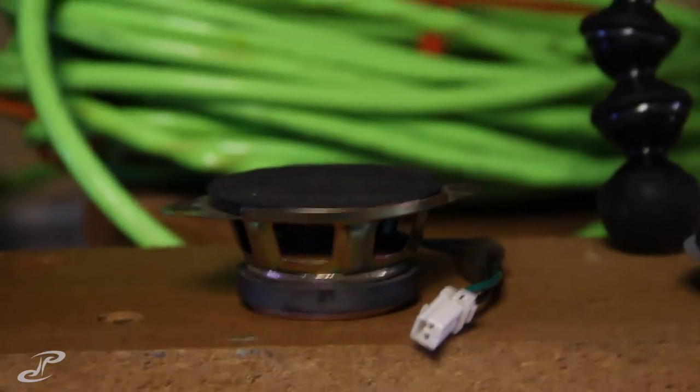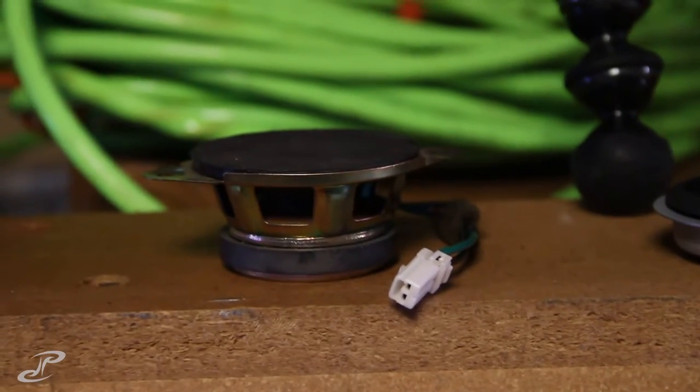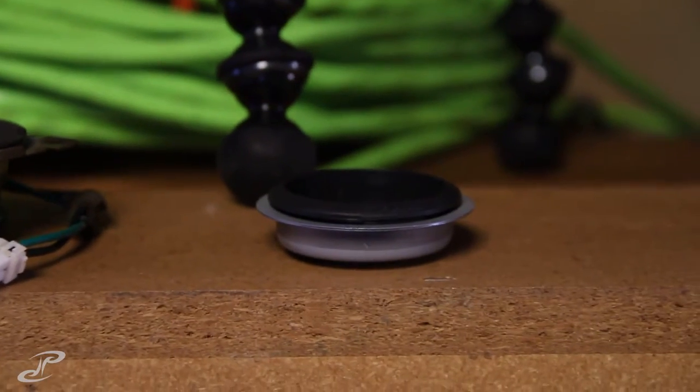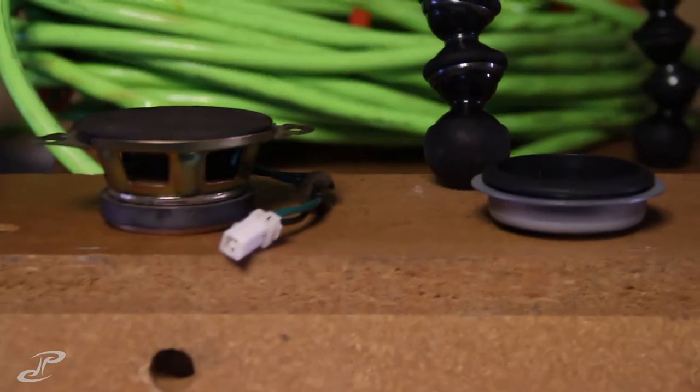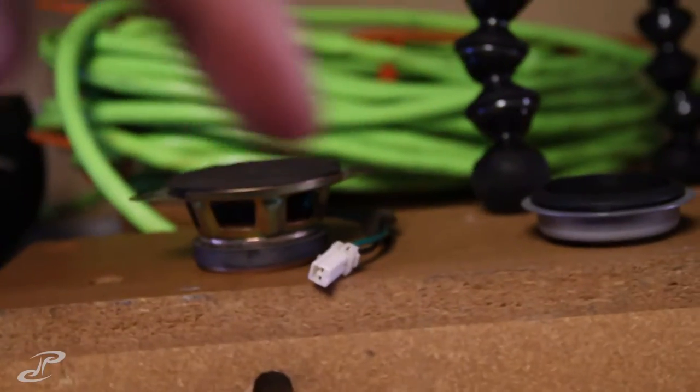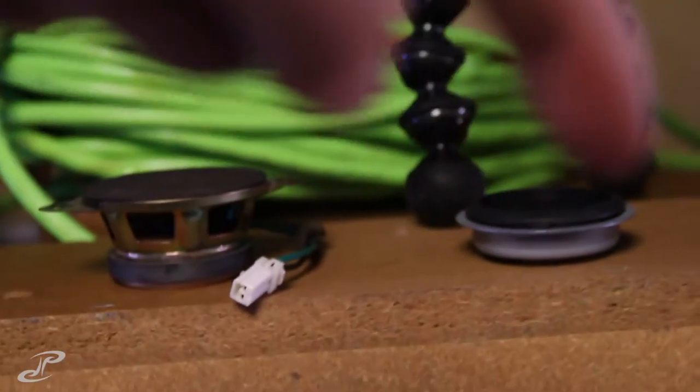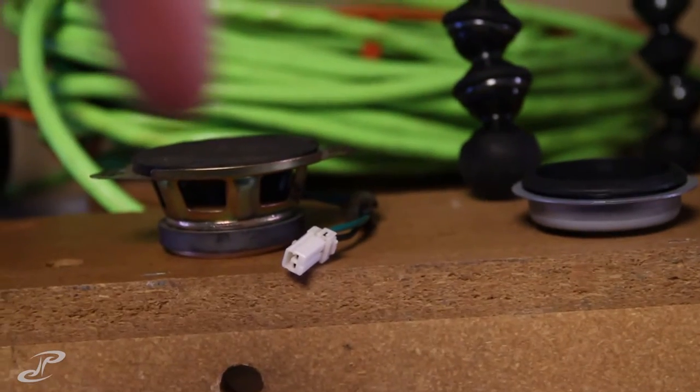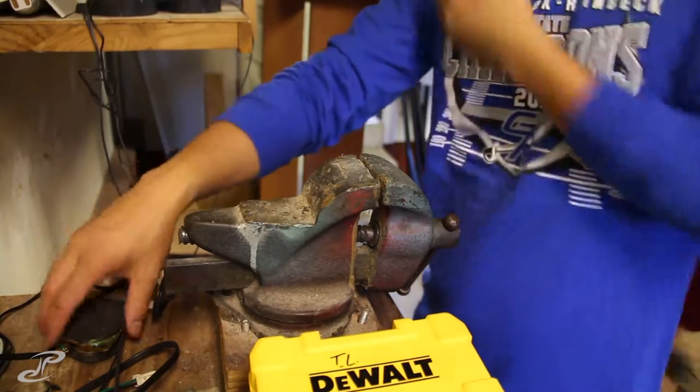So these are the tweeters. We're almost done. These are the tweeters that are in there and these are the ones that we're going to put in. And obviously you can see the metal framing is totally different. So we're going to try to cut all this stuff out, put this into that, and then mount it in. Alrighty.